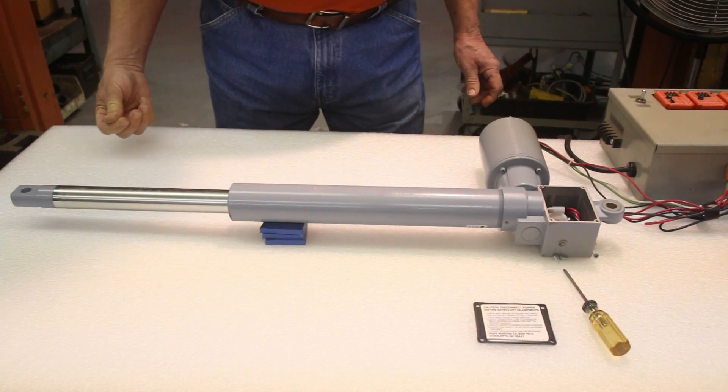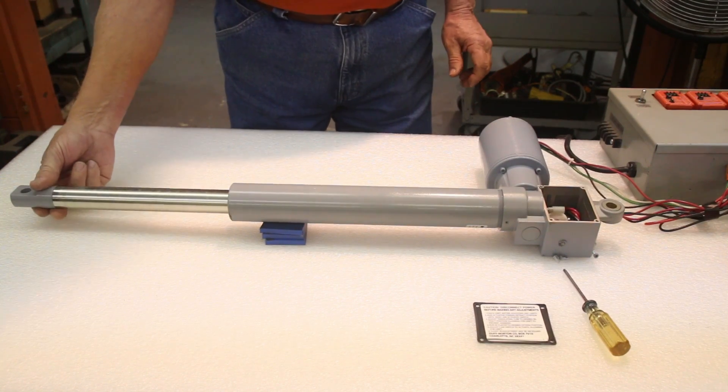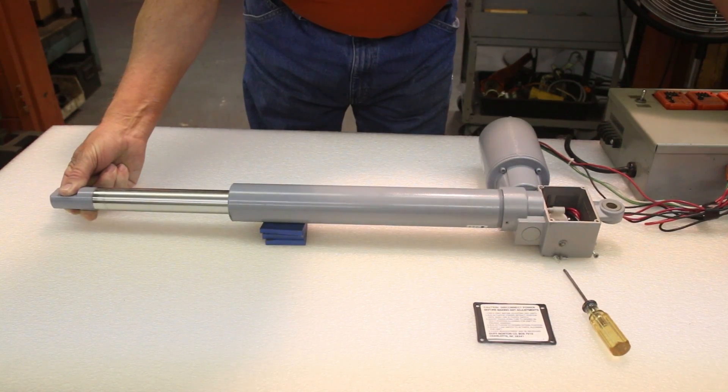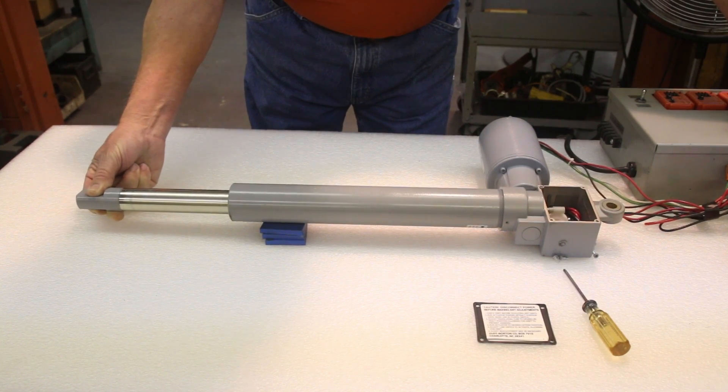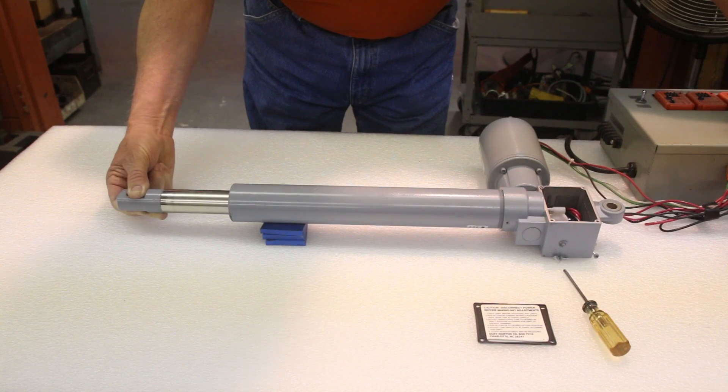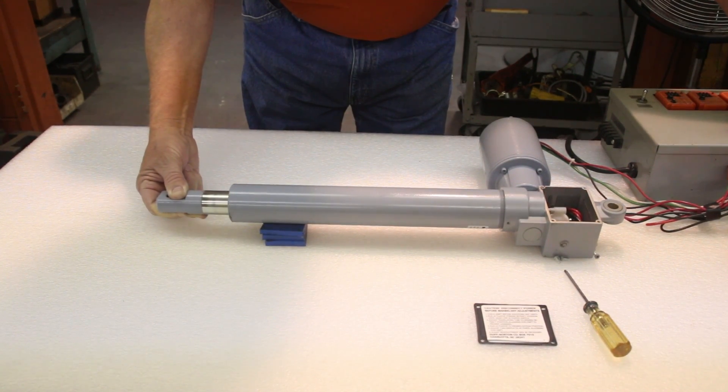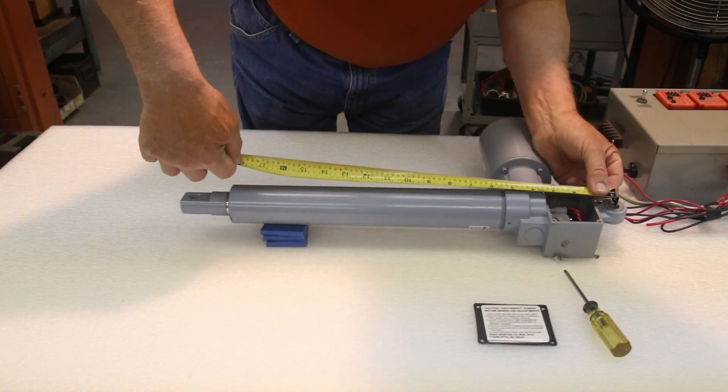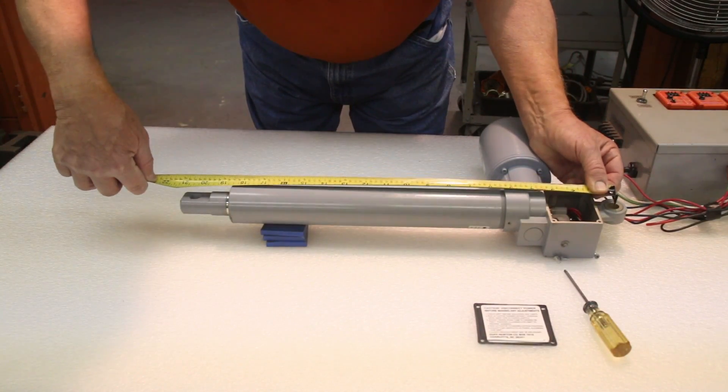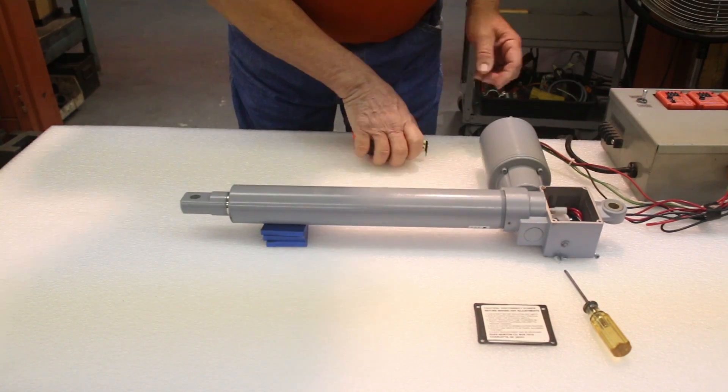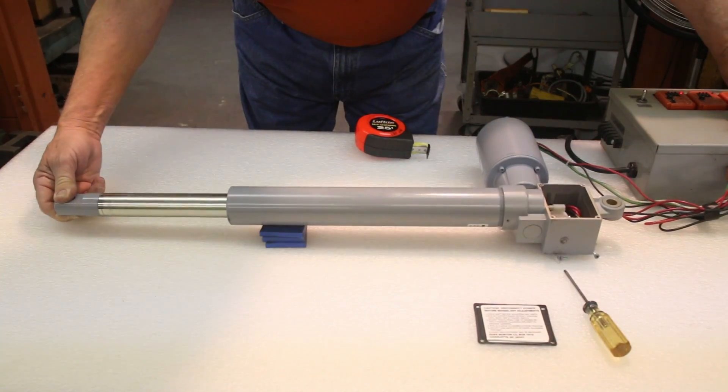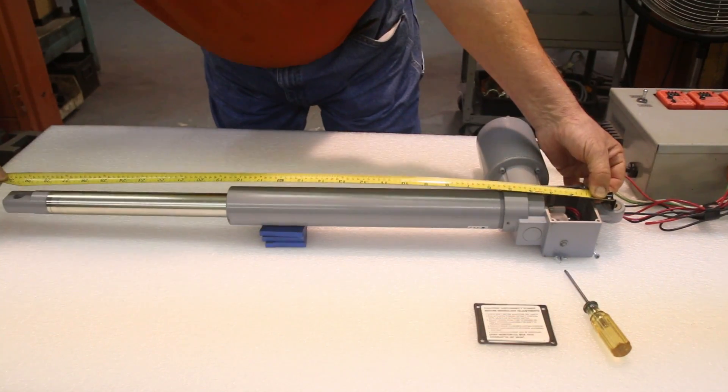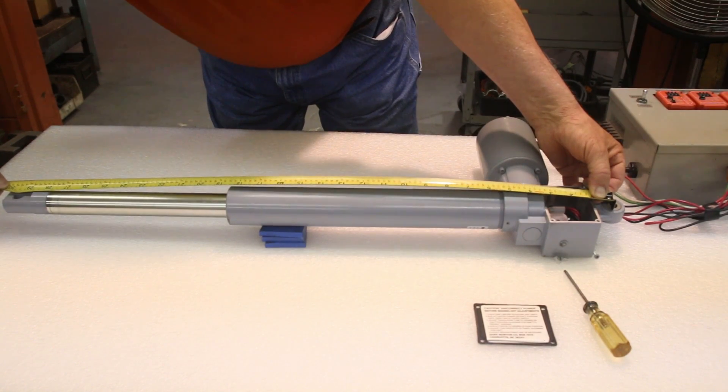Once the extended retract switches have been set, you must restrain the translating tube, and then retract the actuator back to determine if the settings are the same. We have a closed height of 20 and a quarter, and an extended height of 29 and 1 1⁄2 inches.